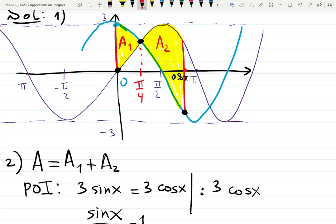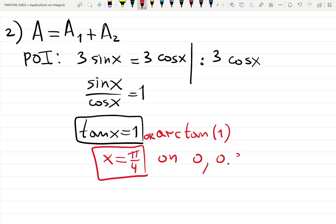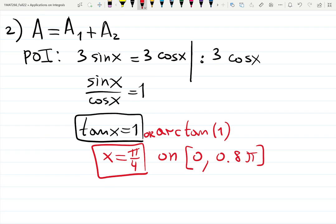Pi over 4 is actually between 0 and pi over 2, so it does look really good on my graph, which was supposed to be a sketch, but I'm impressed with myself that it was a pretty good sketch. So this is pi over 4, or we can call it arc tangent. If it's some complicated angle, then just call it arc tangent 1. So x is pi over 4 because we are on 0 to 0.8 pi, including endpoints. We don't need others.